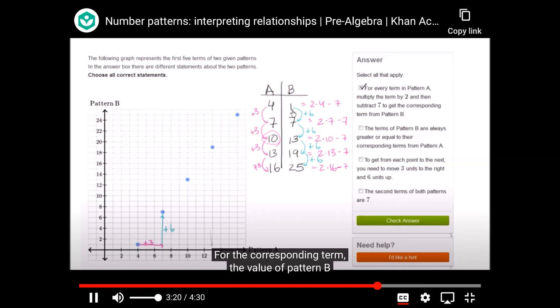So this first statement checks out. For the corresponding term, the value of pattern B is 2 times the value of pattern A minus 7. Now, let's look at the second one. The terms of pattern B are always greater than or equal to their corresponding terms from pattern A. Well, no. That's not right. It's true for a couple of scenarios. For the second, third, fourth, and fifth terms, pattern B is equal to or greater than pattern A. But for the first term, it's not true. Pattern A is greater. So this is not right.